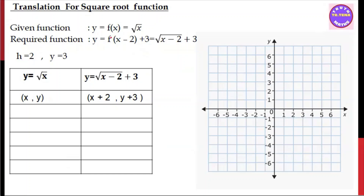Our given function is the square root function: y = √x. The translated function is y = √(x − 2) + 3. That's why, using the form y = √(x − h) + k, here h = 2.